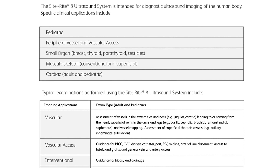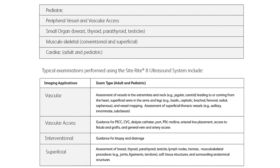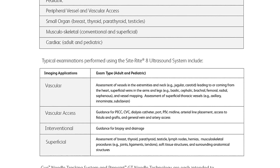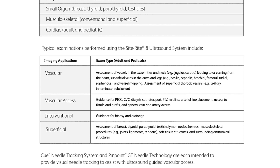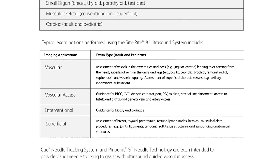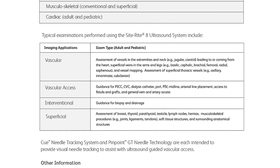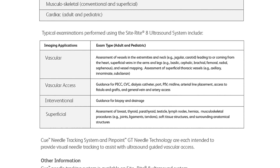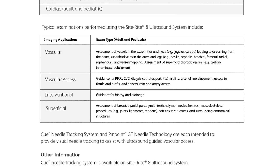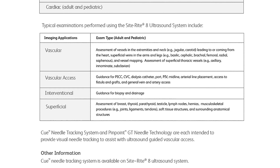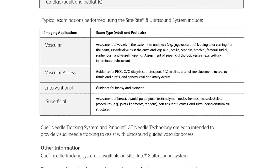Typical examinations performed using the SiteRite 8 Ultrasound System include vascular assessment of vessels in the extremities and neck — for example, jugular, carotid — leading to or coming from the heart, superficial veins in the arms and legs — for example, basilic, cephalic, brachial, femoral, radial, saphenous — and vessel mapping. Assessment of superficial thoracic vessels, for example, axillary, innominate, subclavian. Vascular access guidance for PICC, CVC, dialysis catheter, port, PIV, midline, arterial line placement, access to fistula and grafts, and general vein and artery access.